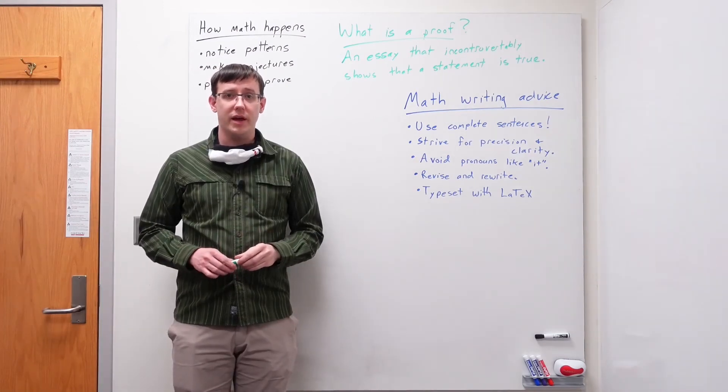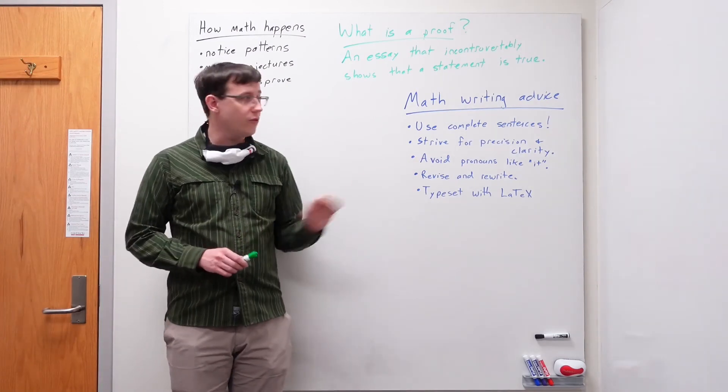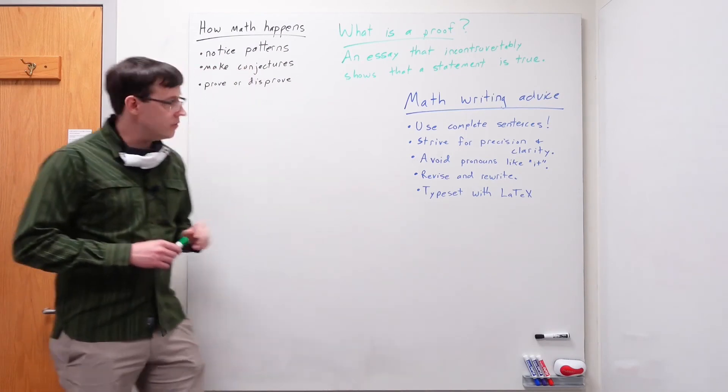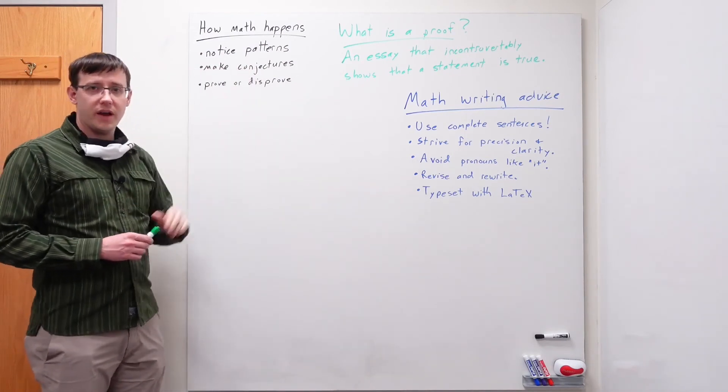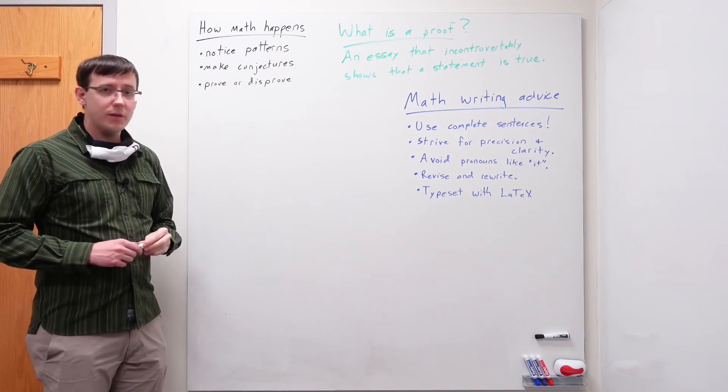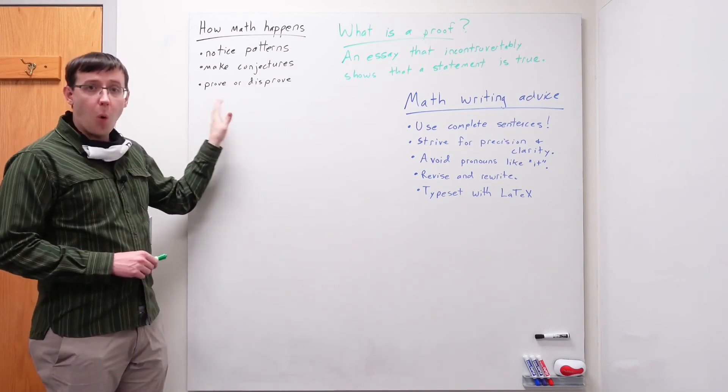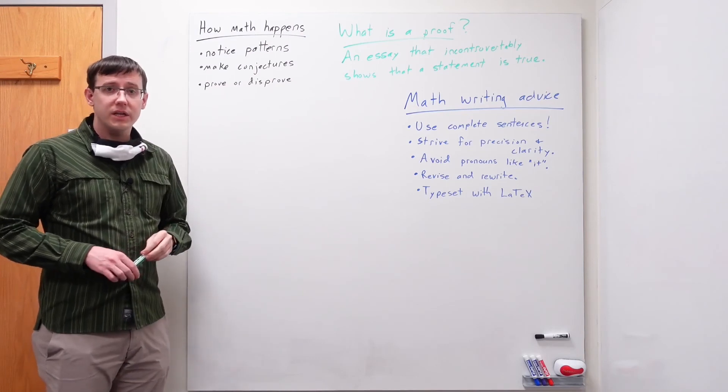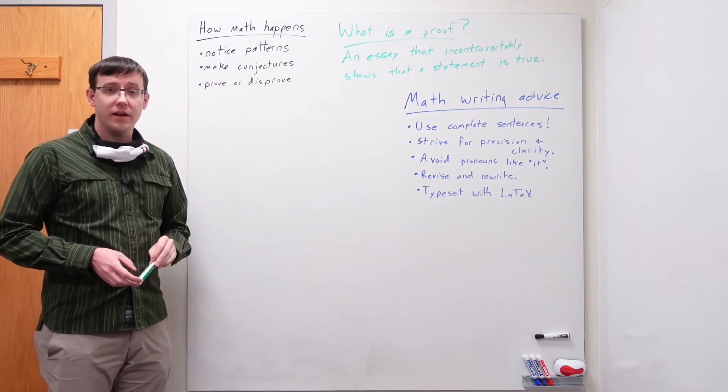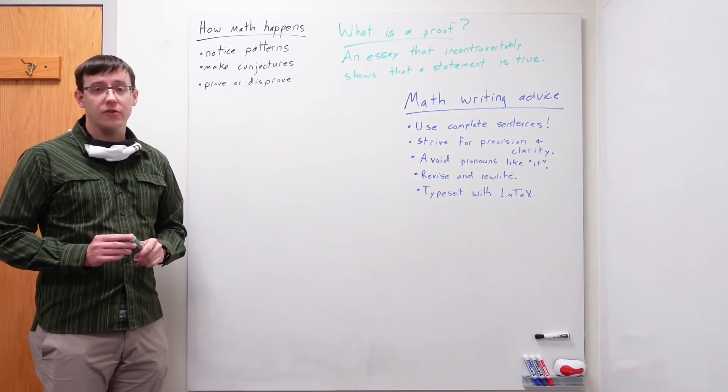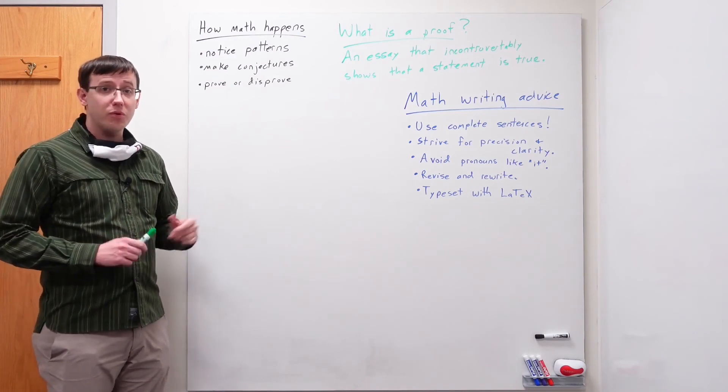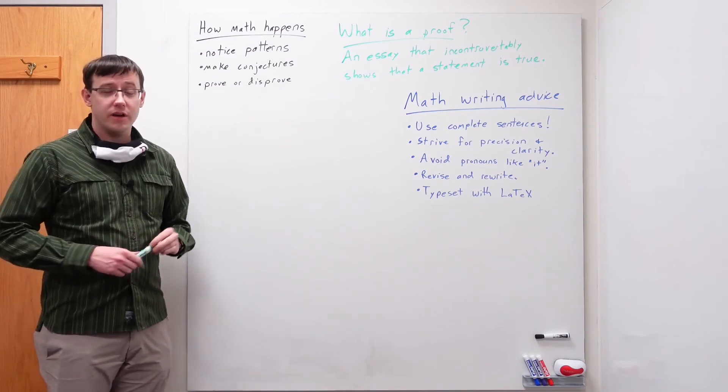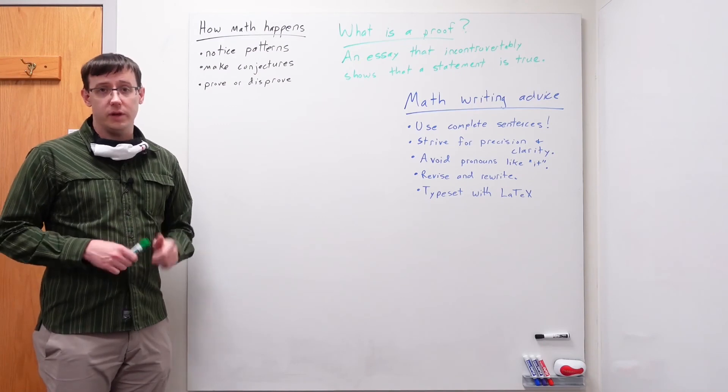One more piece of advice that probably comes in even before you start writing is that my steps of how math happens very deliberately ended with prove or disprove. It's very easy when you have made a conjecture to get caught up in the idea that you need to prove that conjecture. But really, a proof or a disproof of the conjecture is an equally good result.